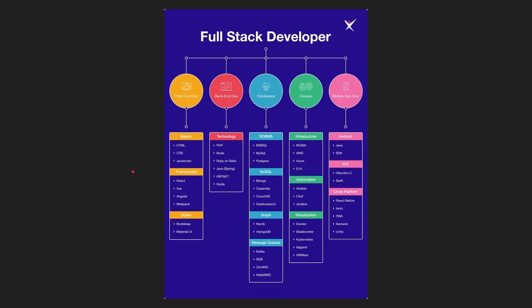When it comes to full stack development, there are generally three major components: front-end development, back-end development, and database management. In the picture there are actually five components, but if you are able to master these three, you will easily be able to learn the other two. The other two completely depend upon these three major components, so make sure you start your journey with these three.